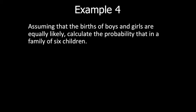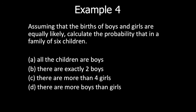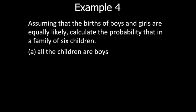Example four: Assuming births of boys and girls are equally likely, calculate the probability that in a family of six children: (a) all children are boys, (b) there are exactly two boys, (c) there are more than four girls, (d) there are more boys than girls. We assume our random variable is having a boy, though you could also define it as having a girl.